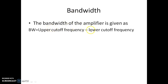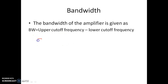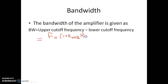Now let us discuss the bandwidth. The bandwidth of the amplifier is given as: bandwidth = upper cutoff frequency minus lower cutoff frequency. So the bandwidth with application of negative feedback will be equal to FH × (1 + G_mid × H), where G_mid is the gain at mid band without negative feedback and FH is the higher cutoff frequency without negative feedback. That is equal to FH × (1 + G_mid × H) minus FL / (1 + G_mid × H).